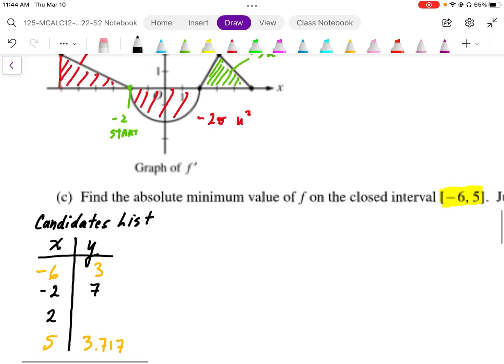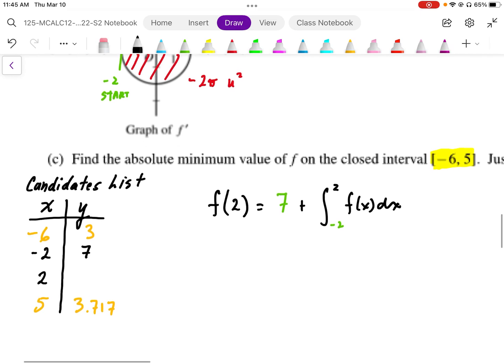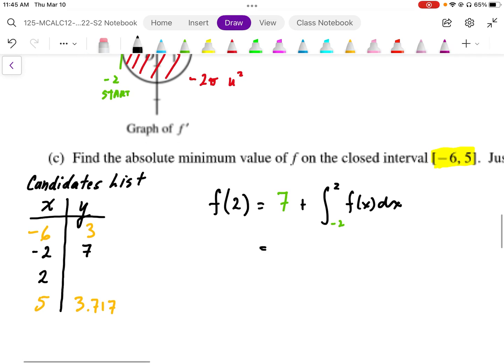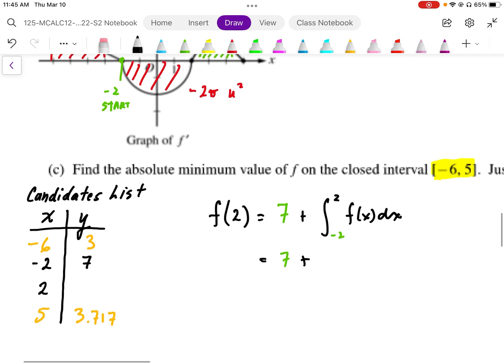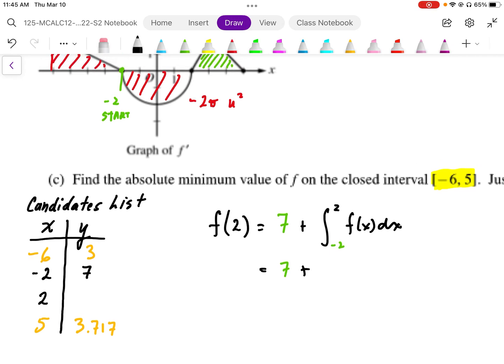And at 2, we need to start at 7. So I'm going to write the integral for this. F of 2 is equal to our starting value of y equals 7, plus the integral from x equals negative 2 to positive 2 of F of x dx. And then that area works out to be 7 plus... That represents the circle, half circle underneath, which we worked out to be negative 2π.